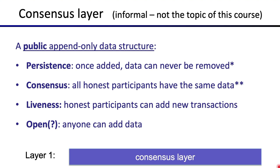It's basically a data structure that anyone can write to, but once something is written to it, that information can never be removed. There are four properties we talk about when we discuss consensus. The first one is persistence: once you write something onto the blockchain, it can never be removed. This property is provided by the consensus layer.